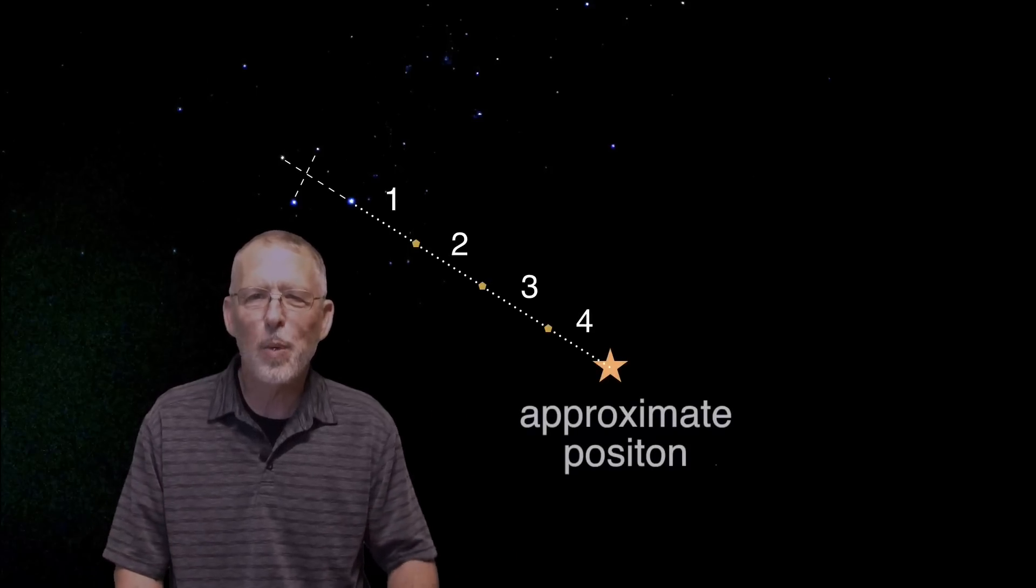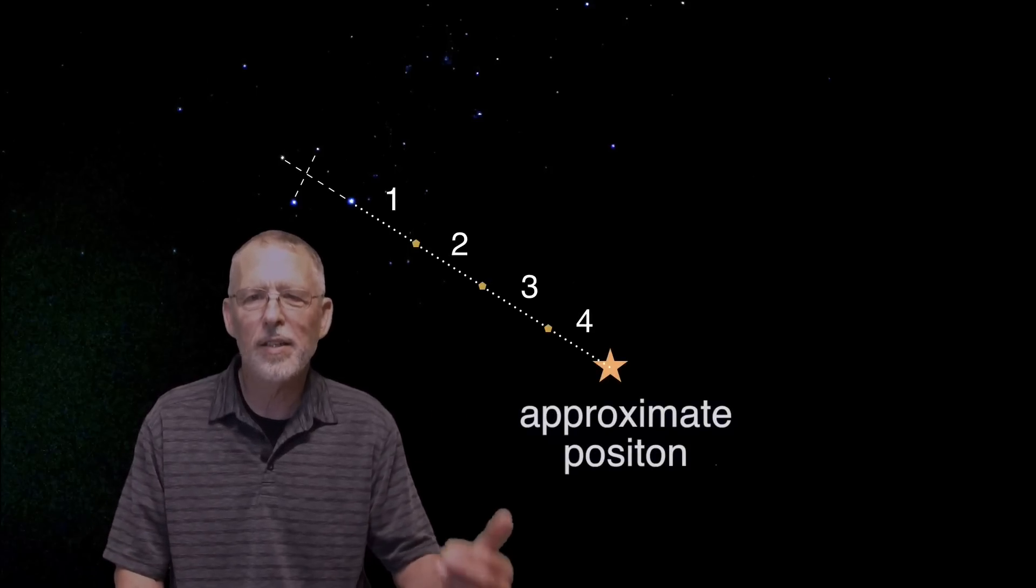If the pointer stars are not visible, an alternative method is available. Take the distance from the top star of the cross to the bottom star on the cross, and apply that same distance four times outward from the bottom of the cross, and you will reach the south celestial pole.